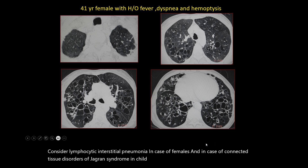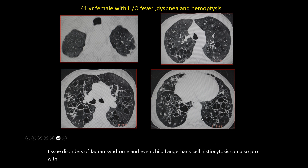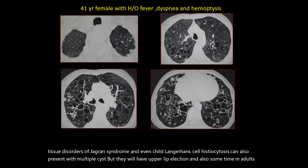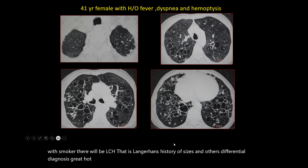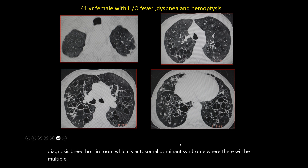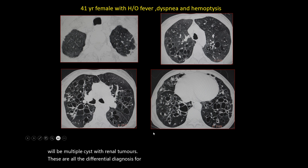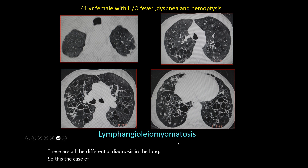Langerhans cell histiocytosis can also present with multiple cysts but will have upper lobe predilection — especially in adult smokers. Another differential is Birt-Hogg-Dubé syndrome, which is an autosomal dominant syndrome with multiple cysts and renal tumors. So these are all the differentials for cysts in the lung. This is ultimately a case of lymphangioleiomyomatosis.